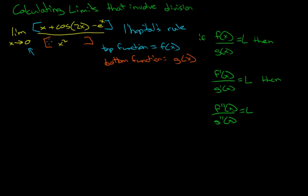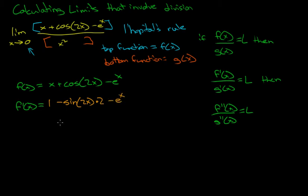What we can do here is take the derivative of the top. Since f(x) is the top, then we have f(x) equals x plus cos(2x) minus e to the x. We're trying to find f prime of x, which is going to be 1 plus, now cos goes to negative sine, so it's minus sine(2x). Since this is the outside function, we have to take the derivative of the inside, so that's times 2 minus e to the x. This is interesting because e to the x, the derivative is also e to the x.